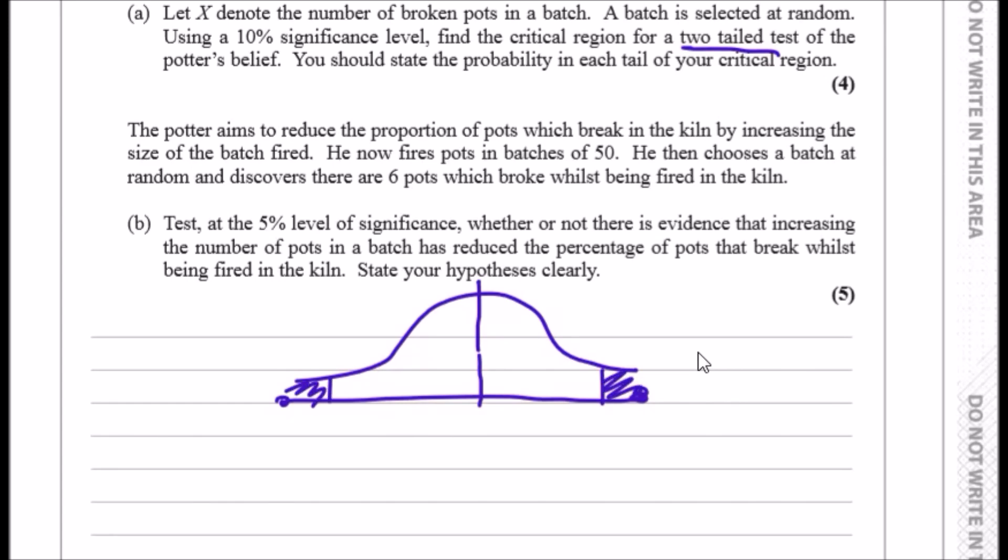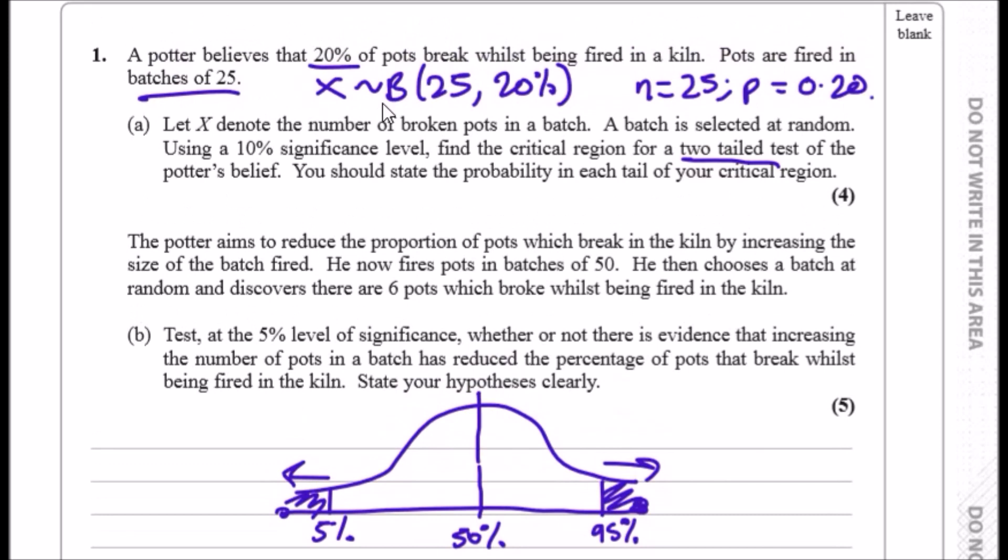If we assume that the middle is 50% because it's symmetrical, that means the first 5% is here and the last 5% starts at 95%. We only want probabilities that are less than 5% or greater than 95%, as close as possible to 5%. So we look at the binomial distribution table, find n equals 25 and p is 0.20, and just find the closest values up to 5% and just above 95%.